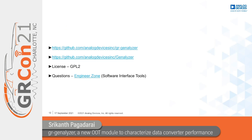In conclusion, while it is possible to use discrete blocks from the GNU Radio source tree to compute many data converter performance metrics, a dedicated out-of-tree module that computes such metrics according to the definitions provided in standards documents is definitely needed. GR Generalizer is intended to fill this gap by providing implementations of common performance metrics in a standards-compliant manner.